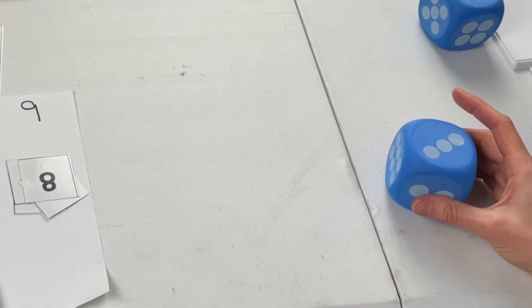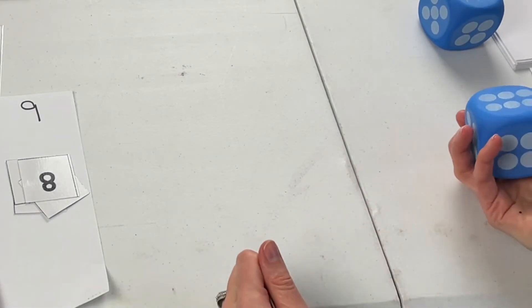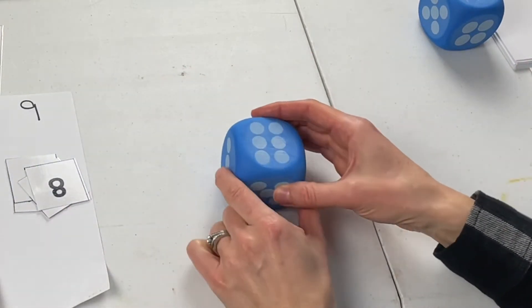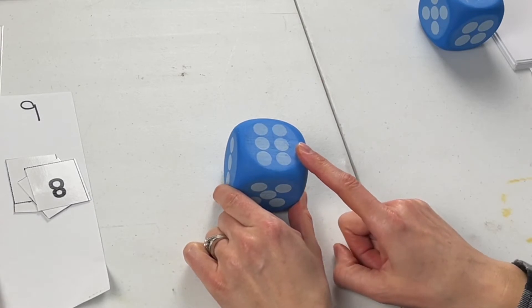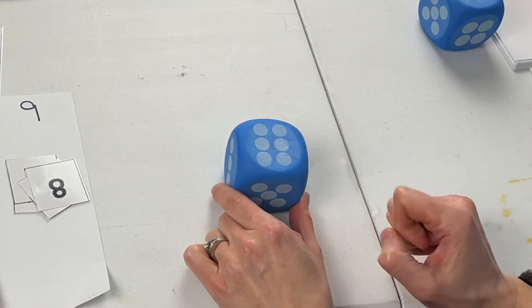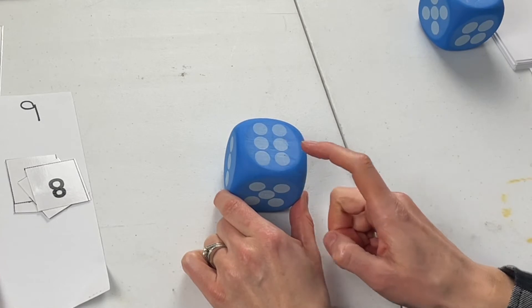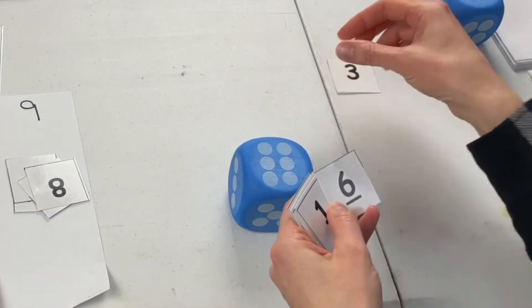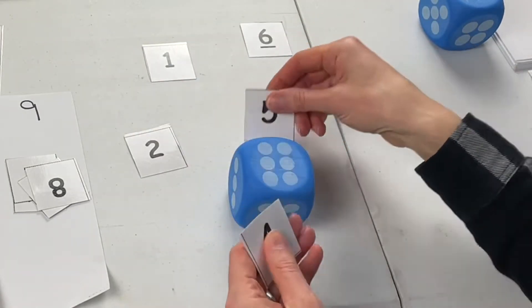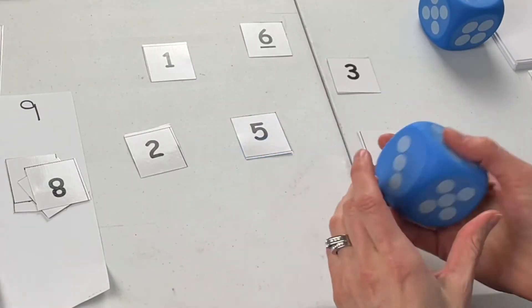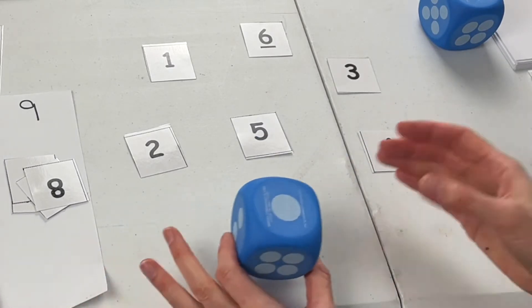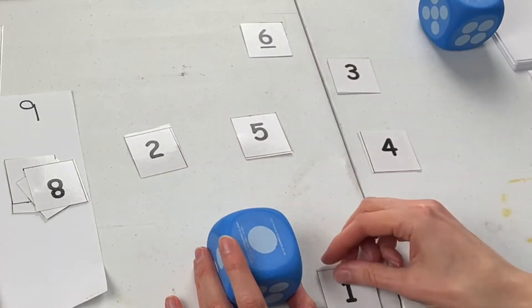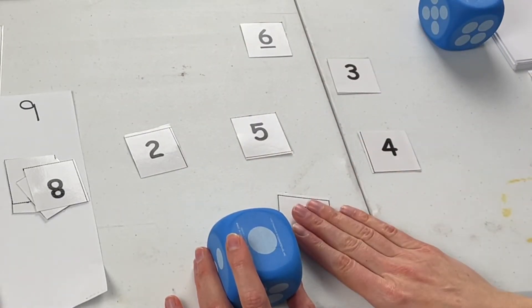So for identifying numbers, your kiddo will just have one dice to start. And they will roll and they will count them if they don't know them, or they will just say the number. Six. Six. If they're still working on counting, that's fine. Give them a little practice with that. And then you can add in some number cards and they will be matching. So then they can roll one and then they can match it, or they can take that one and then try to find some of the other ones.